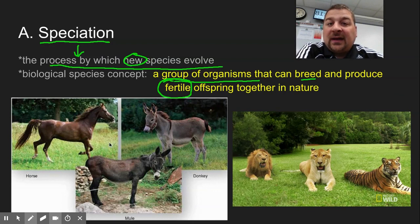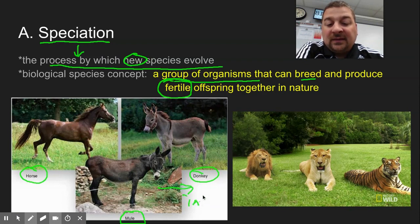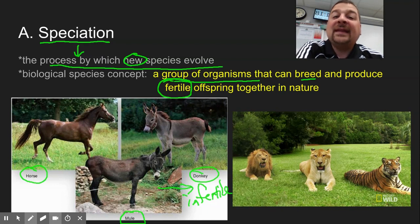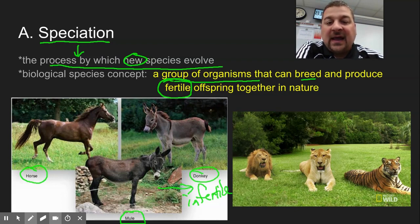Two examples that humans have produced: if you take a horse and a donkey and cross them, you get a mule. You might ask, are horse and donkey the same species because they can make offspring? Well, the mule is infertile. Sometimes the F1 might be fertile, but the next generation is often infertile. So we consider horse and donkey separate species. Even though you can make a hybrid, the hybrid can't perpetuate that line.